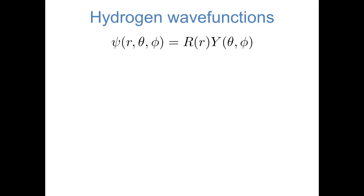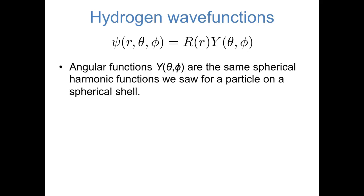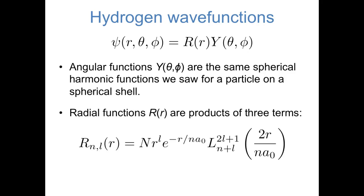The hydrogen wave functions are a product of a radial wave function and an angular wave function. The angular wave functions Y(θ,φ) are the same spherical harmonic functions we've seen before for a particle on a spherical shell, each with two quantum numbers l and m_l. The radial wave functions are new — each has two quantum numbers n and l, and is the product of three terms plus a normalization constant: a power r^l, a decaying exponential e^(−r/na₀) where a₀ is the Bohr radius, and a polynomial L(2r/na₀). Those polynomials can be looked up in a table in the textbook.